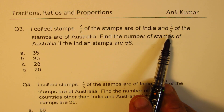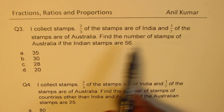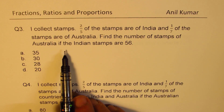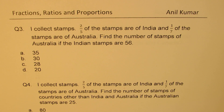Question number three: I collect stamps. Two-fifths of the stamps are of India and one-seventh of these stamps are of Australia. Find the number of stamps of Australia if the Indian stamps are 56. Question number four: I collect stamps. Two-fifths of the stamps are of India and one-seventh of the stamps are of Australia. Find the number of stamps of countries other than India and Australia if the Australian stamps are 25.